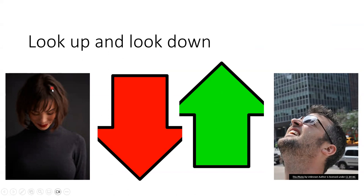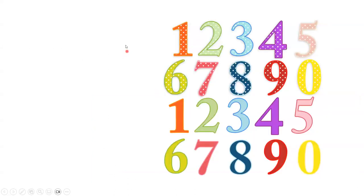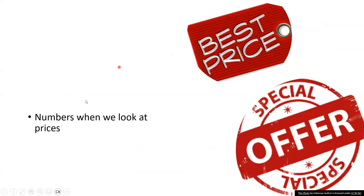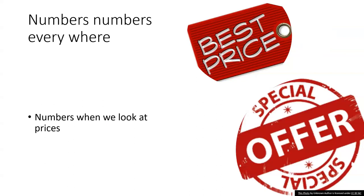Numbers, numbers, numbers everywhere. Numbers when we look at prices. The meaning of price: if you want to get anything, you will ask about the price of it. How much is this? It will be one dollar, two hundred dollars, two thousand dollars. This is a price number.